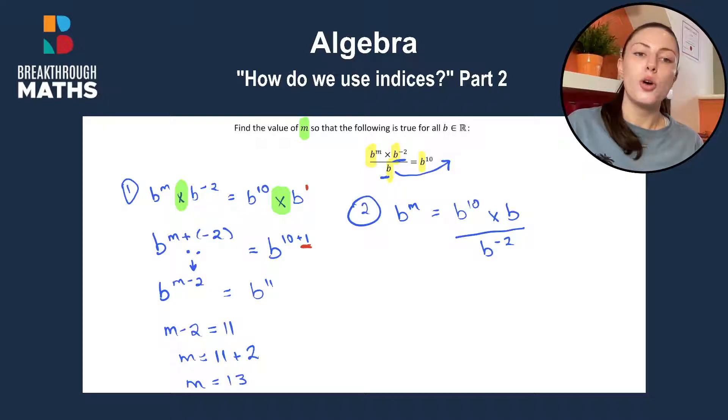Now using our rules of indices, we'll do the multiplying first and we'll deal with that. So we'll have B to the power of M is going to be adding the powers here because we're being multiplied. So B to the power of 10 plus 1 because here is B to the power of 1. So that's what we did beforehand,